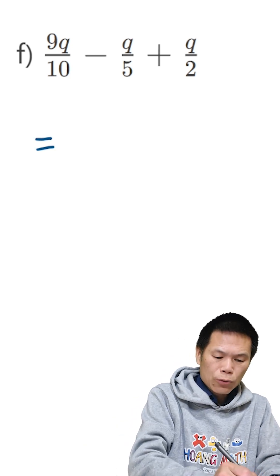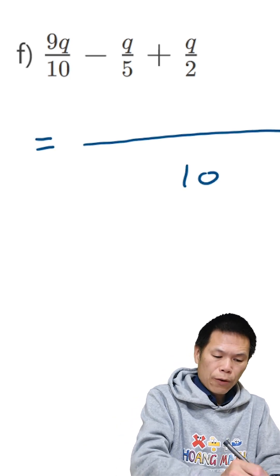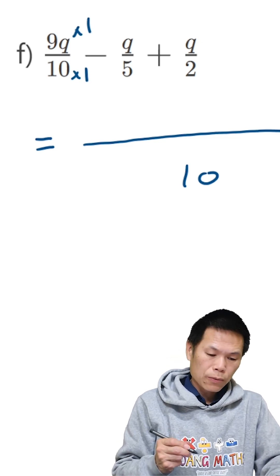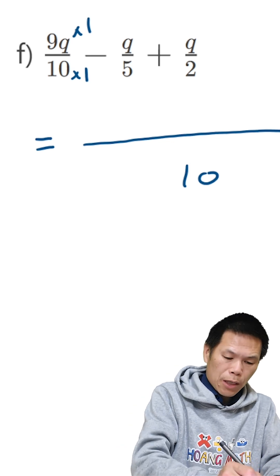So that is equal to over 10. From 10 to 10, I times 1. So this times by 1. So 9q times 1 gives me 9q.